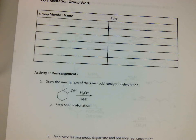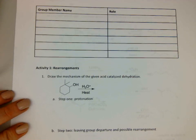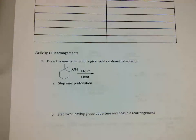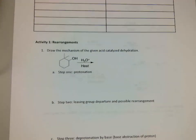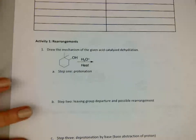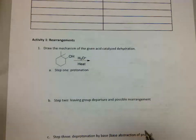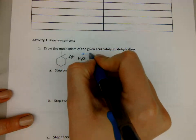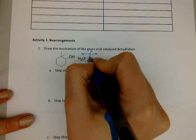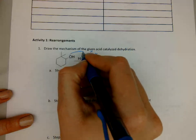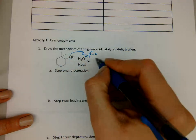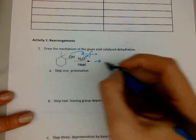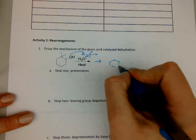Hi, so today I'm going to be working through some practice problems from chapter 7 and 8 that we did for recitation on November 3rd. First, draw the mechanism of the given acid-catalyzed dehydration. Normally I like to draw out the H3O+ just because it's easier to draw the arrows. Step 1 is protonation.